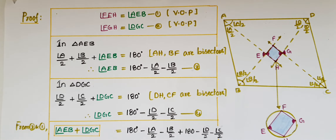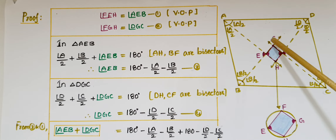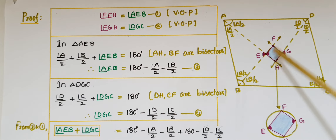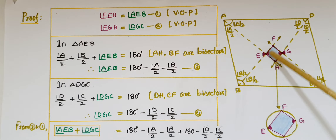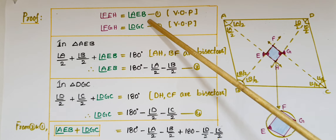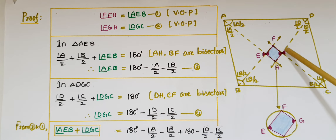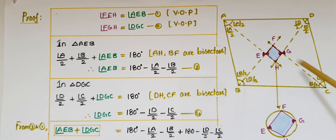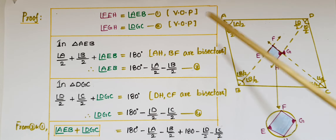We have to prove that angle FEH plus angle FGH is equal to 180 degrees. Angle FEH is equal to angle AEB — these two angles are vertically opposite angles, so these two are equal. This is the first equation. Similarly, angle FGH is equal to angle DGC — these two angles are also vertically opposite angles. This is the second equation.